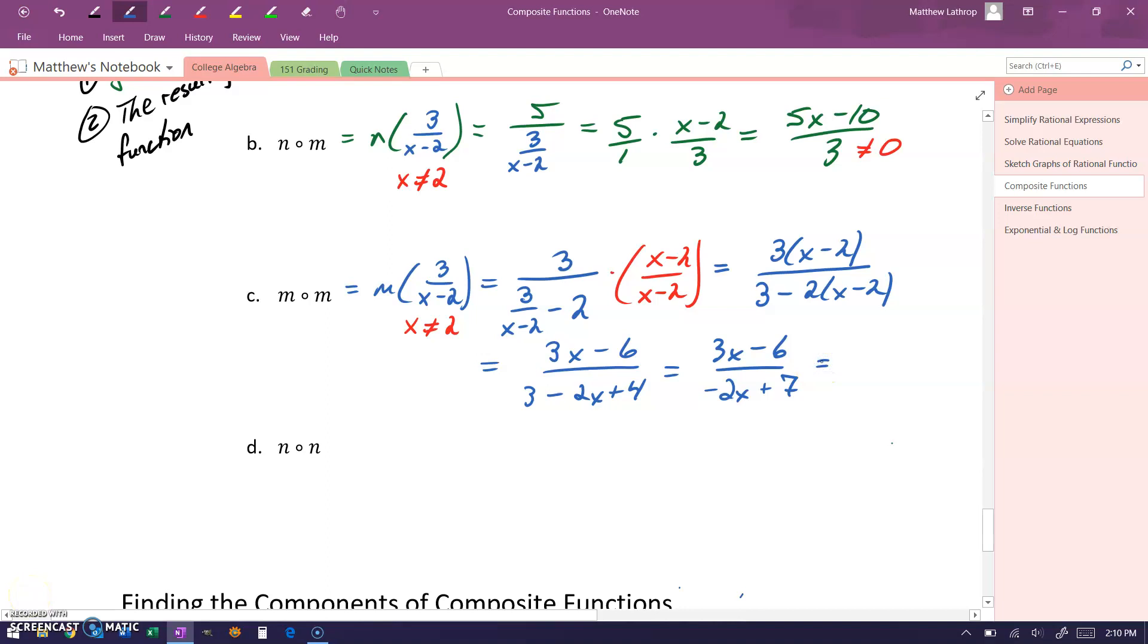Or if we were to factor that negative out of the denominator, we would have the opposite of the rational function 3x minus 6 over 2x minus 7.